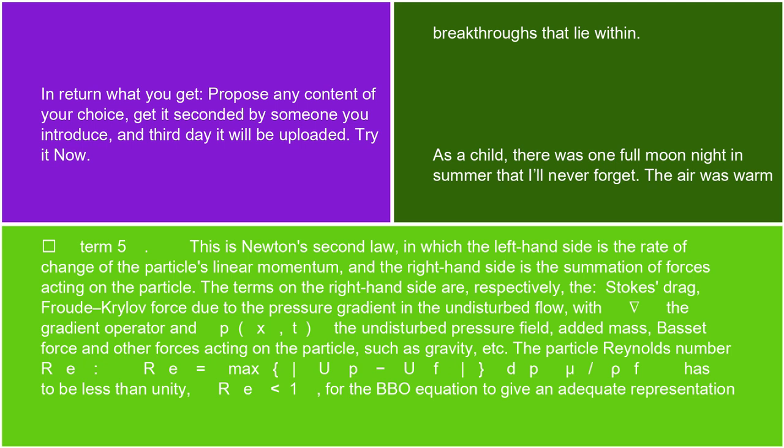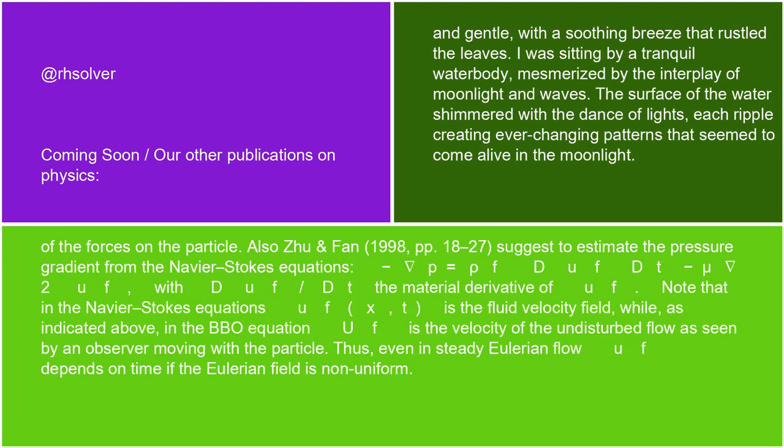The particle Reynolds number Re = max(|up - uf|dp/(μ/ρf)) has to be less than unity, Re < 1, for the BBO equation to give an adequate representation of the forces on the particle.